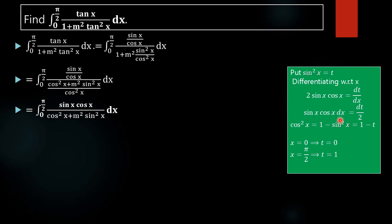So sin(x)cos(x) dx equals dt/2. Now we also note that cos²(x) equals 1 minus sin²(x), so cos²(x) can be rewritten as 1 minus t. Next, we need the limits of integration. When x = 0, t = sin²(0) = 0. When x = π/2, t = sin²(π/2) = 1, since sin(π/2) = 1. So the limits change from 0 to 1.